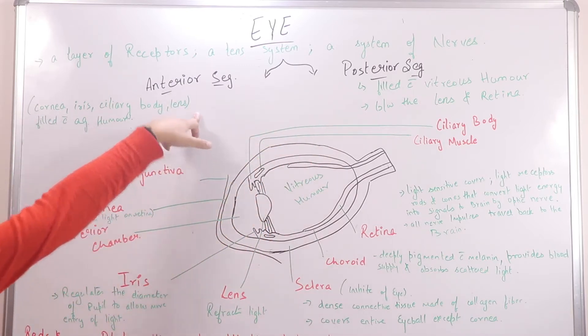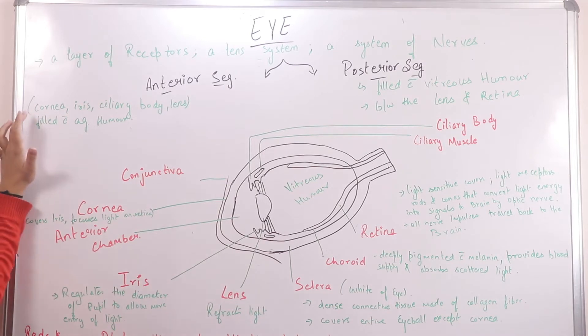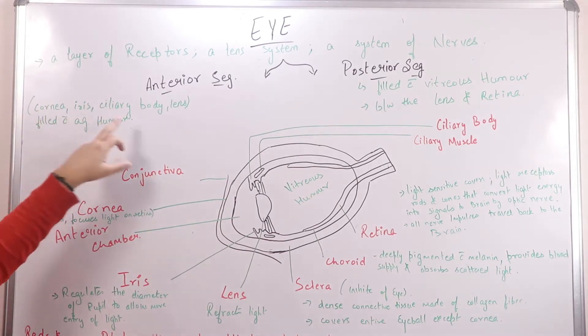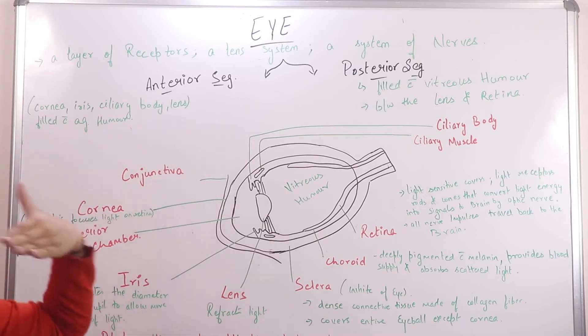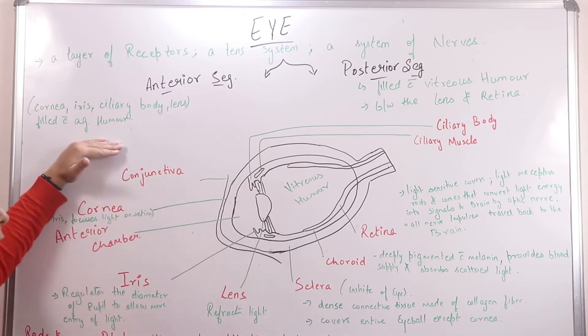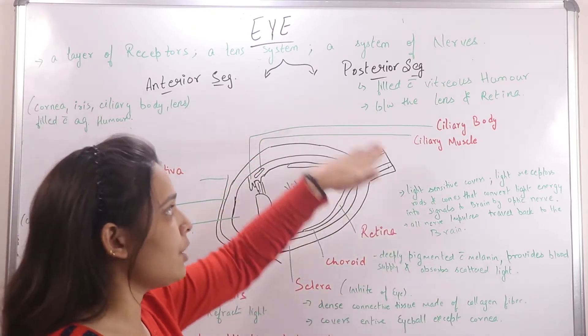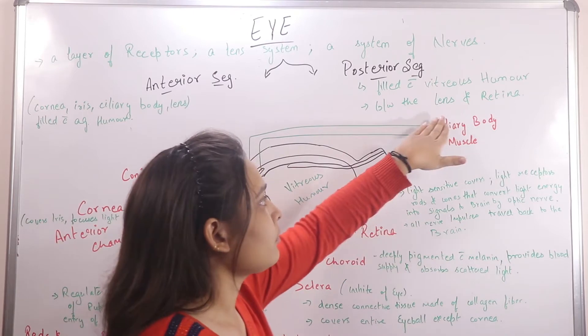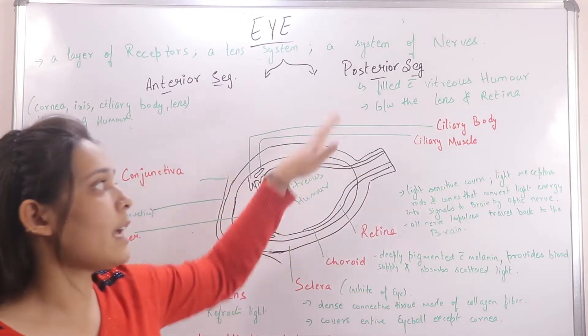The anterior segment includes our cornea, the iris, the ciliary bodies, and the lens. The posterior segment comes behind the lens and includes the retina, which is called our posterior segment.